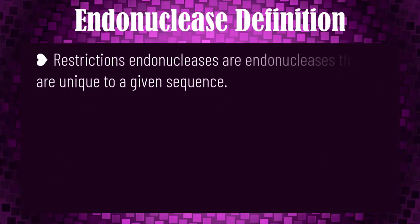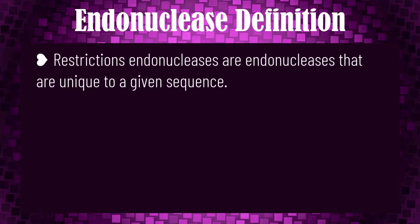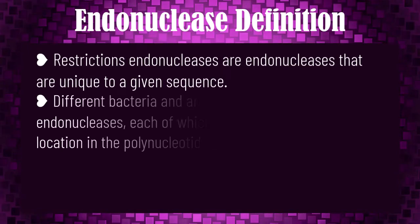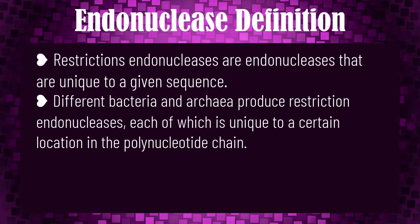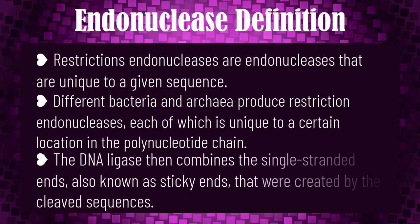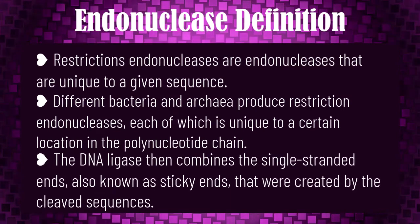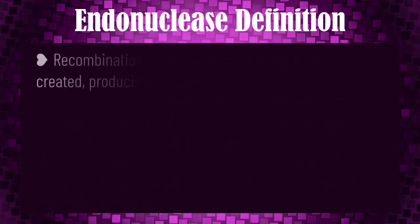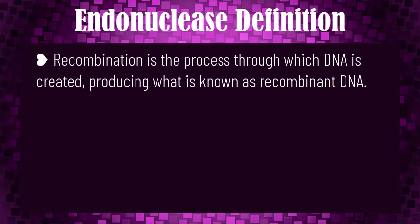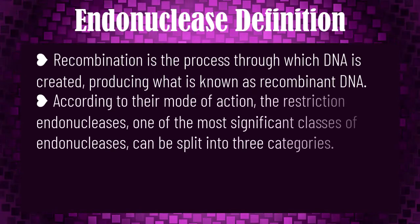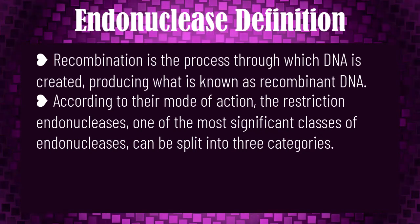Restriction endonucleases are nucleases that are unique to a given sequence. Different bacteria and archaea produce restriction endonucleases, each of which is unique to a certain location in the polynucleotide chain. DNA ligase then combines the single-stranded ends known as sticky ends that were created by the cleaved sequences. Recombination is the process through which DNA is created, producing what is known as recombinant DNA.